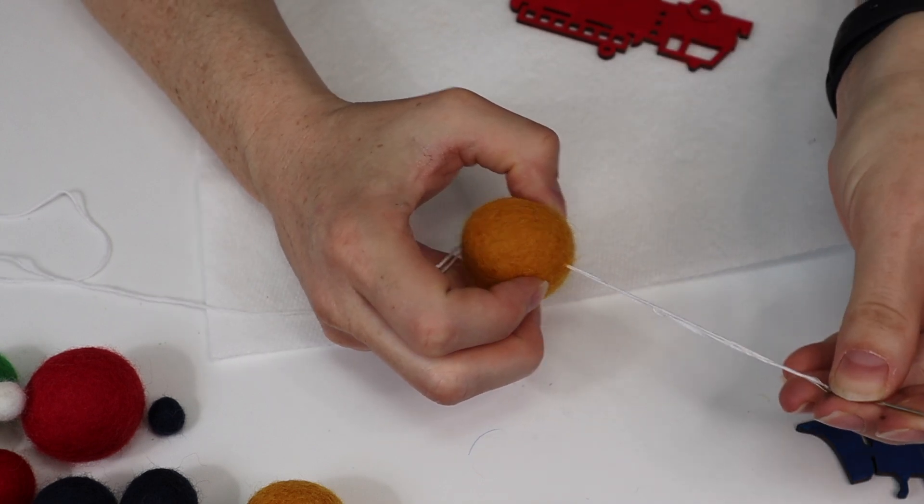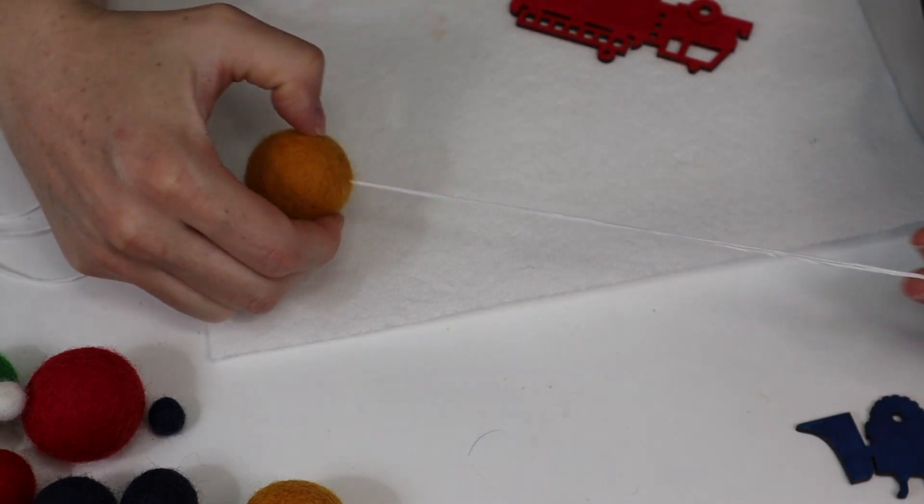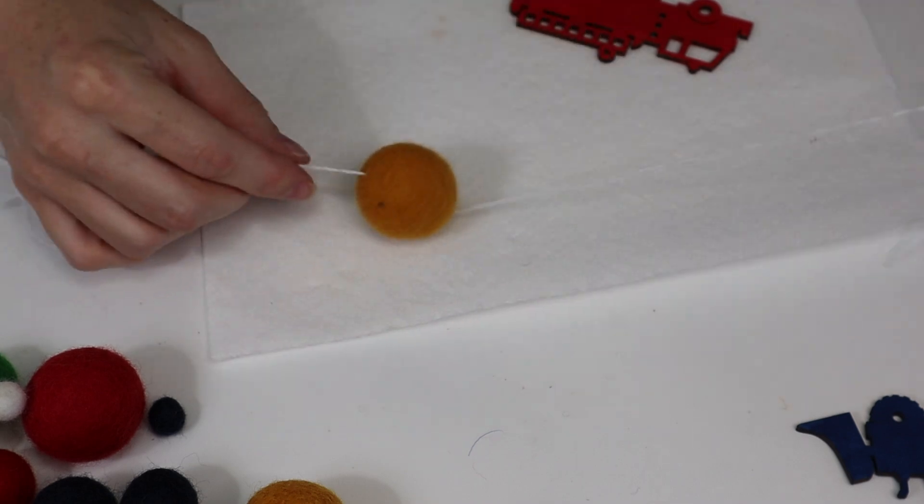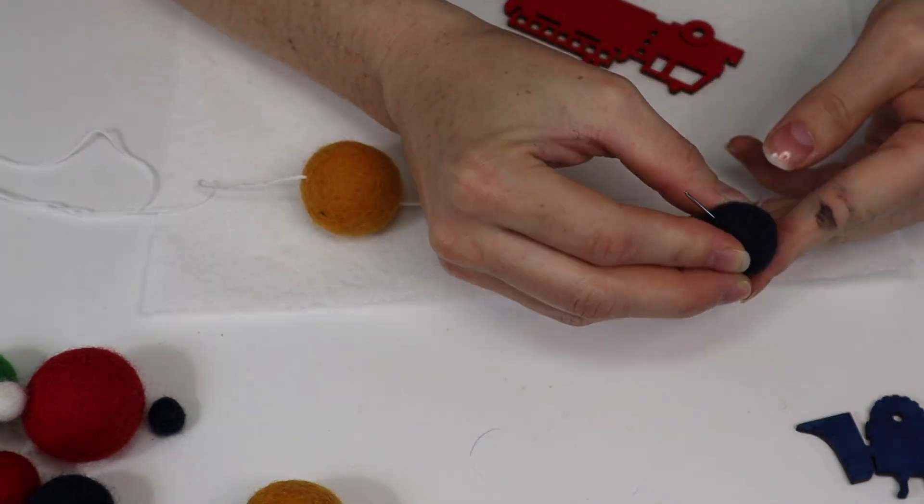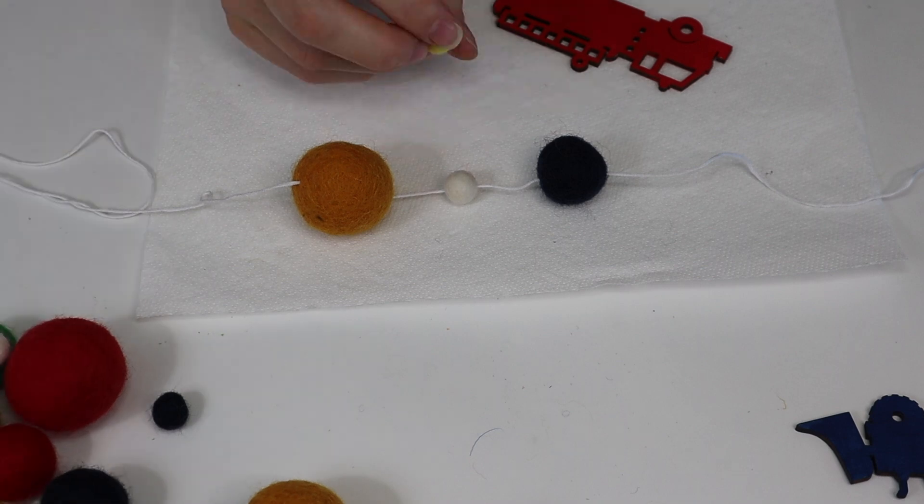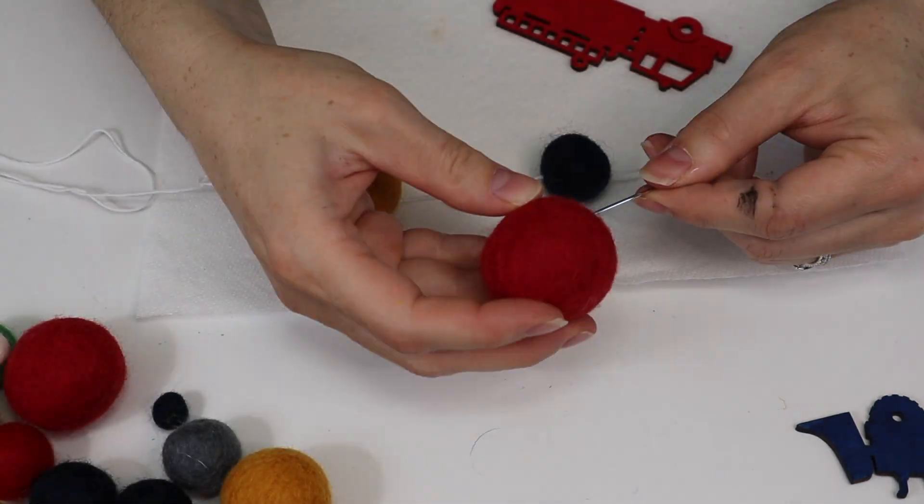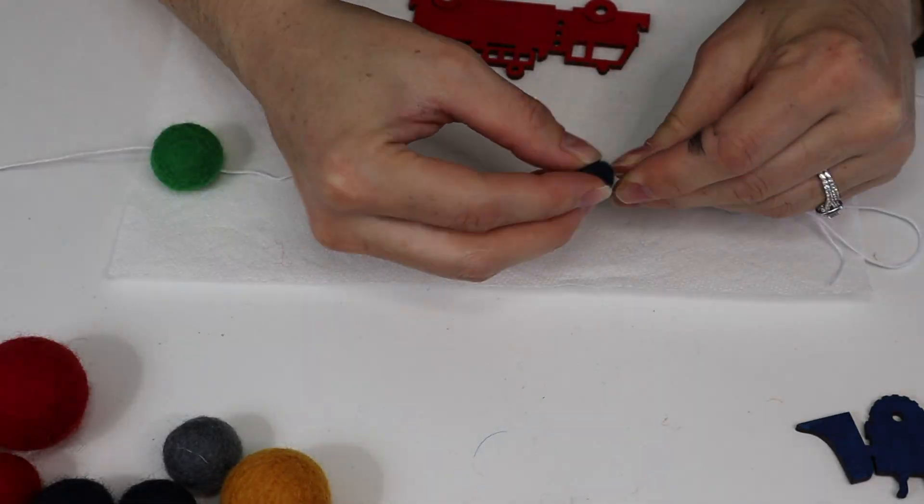I've seen many baby mobiles on Etsy for hundreds of dollars. I saw one for maybe $75, but I think this cost me, with all the material, about $35 to make, maybe even less than that because I already had some of the paint. So much better deal if you can make it yourself.